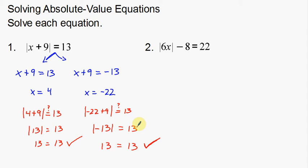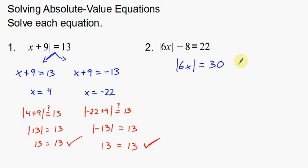Now I'm going to work on the second example, which is a little bit different. The first example had the absolute value on the left and numbers on the right. This one has an absolute value and a number on the left, and numbers on the right. So before splitting, we need to get the absolute value by itself — add 8 to both sides. Now I have the absolute value of 6x by itself, and 30 on the other side.